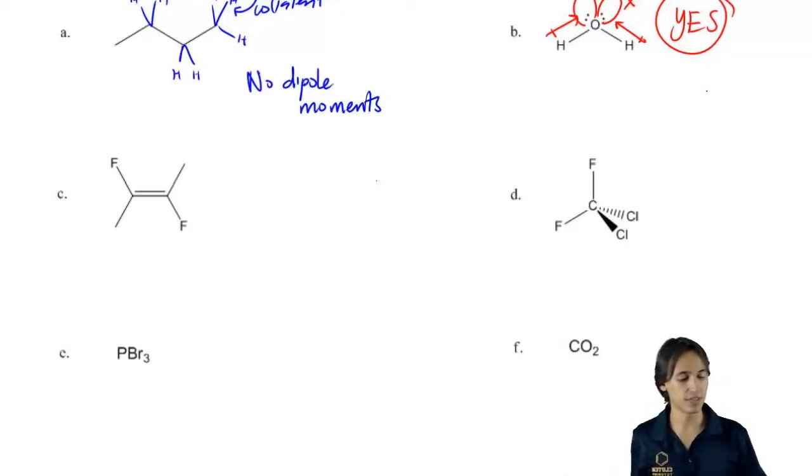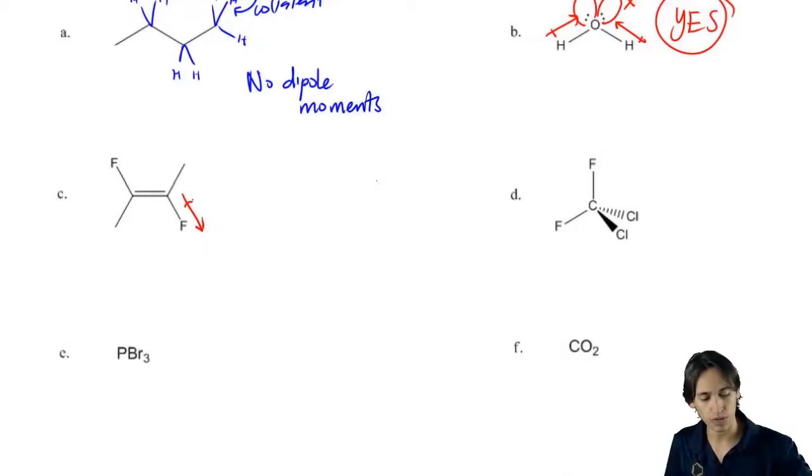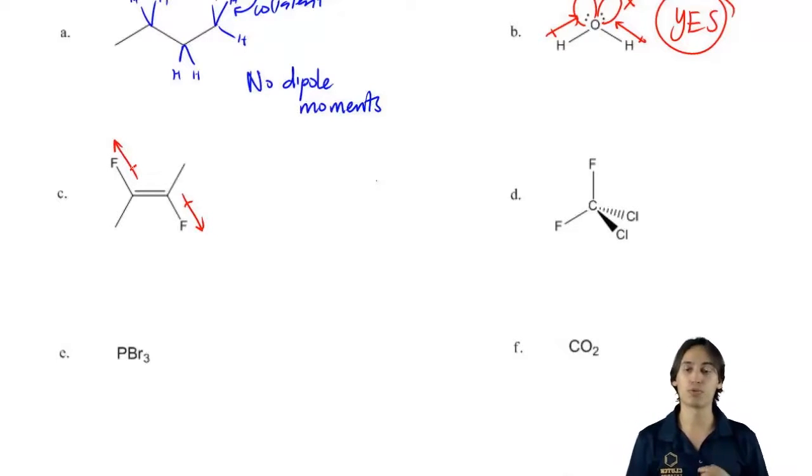Alright, so for C, I had two dipoles - one pulling away here, one pulling away there. Do these dipoles perfectly cancel out? Yes. So the answer is that I would have no net dipole.